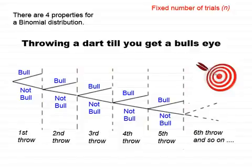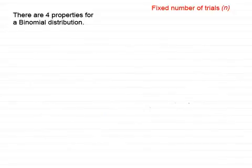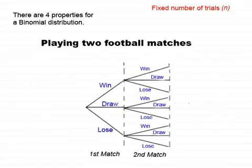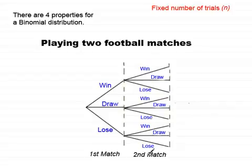Let's look at another tree diagram which has a finite, fixed number of trials. Here we have the playing of two football matches. I've got my fixed trials — each one represents a match, the first match and the second match. In any match you can either win, draw, or lose. If you've won the first match, you could go on to win, draw, or lose the second match.